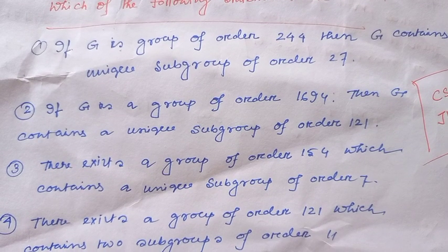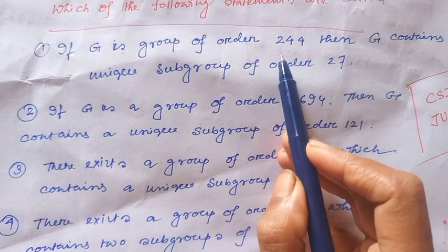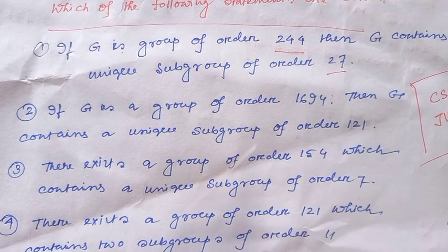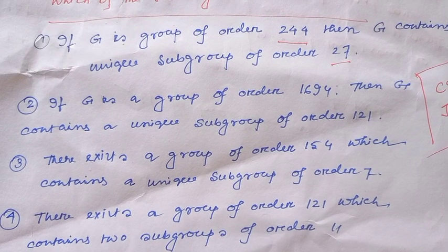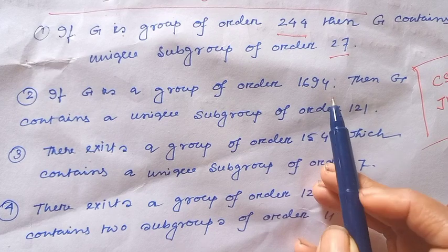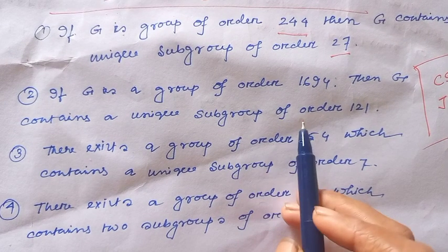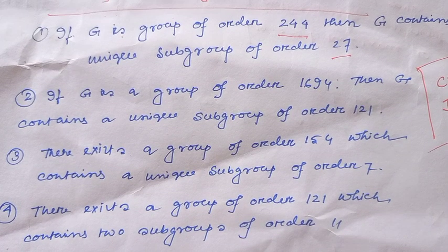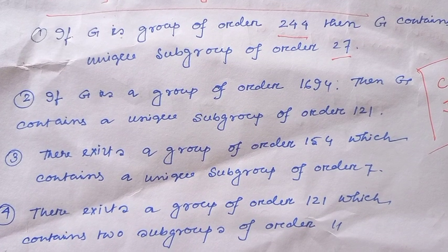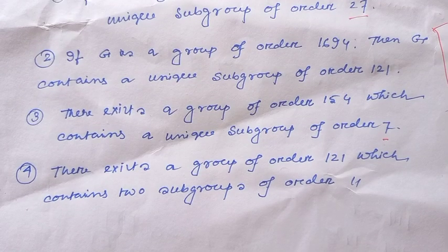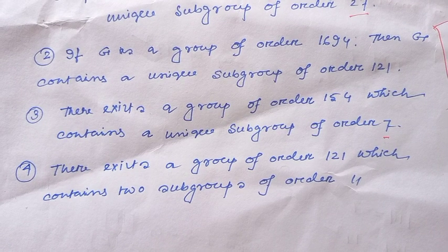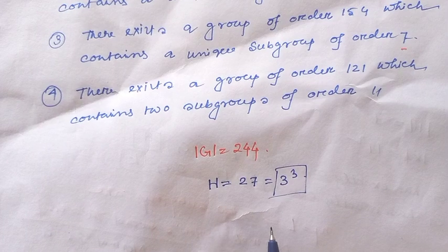The question is: if G is a group of order 244, then G contains a unique subgroup of order 27. Option 2: if G is a group of order 1694, then G contains a unique subgroup of order 121. Option 3: there exists a group of order 154 which contains a unique subgroup of order 7. Option 4: there exists a group of order 121 which contains two subgroups of order 11.